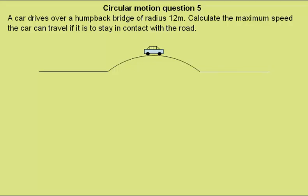Circular Motion Question 5. A car drives over a humpback bridge of radius 12 meters. Calculate the maximum speed the car can travel if it is to stay in contact with the road.